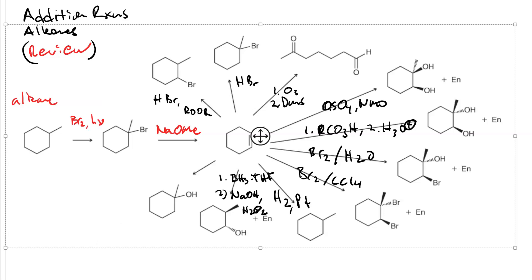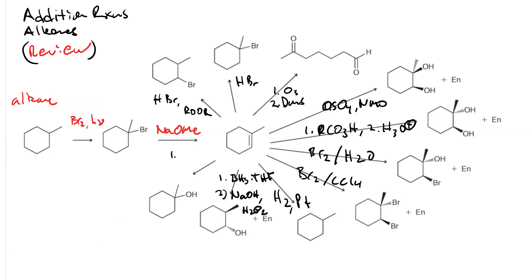To get the Markovnikov alcohol we could do it two ways: first, we could use dilute sulfuric acid — that would give us acid-catalyzed hydration — or we could do oxymercuration-demercuration: the first step would be mercuric acetate and water, followed by sodium borohydride.